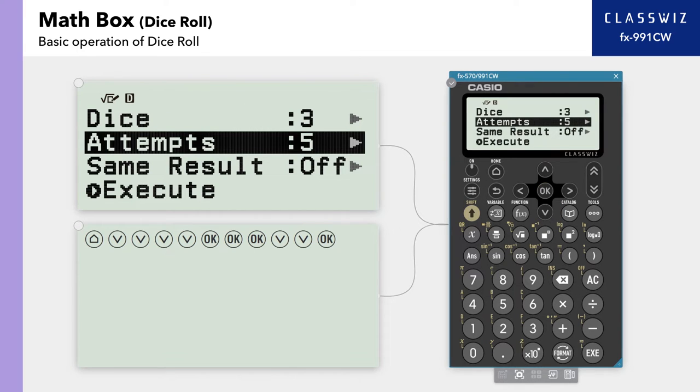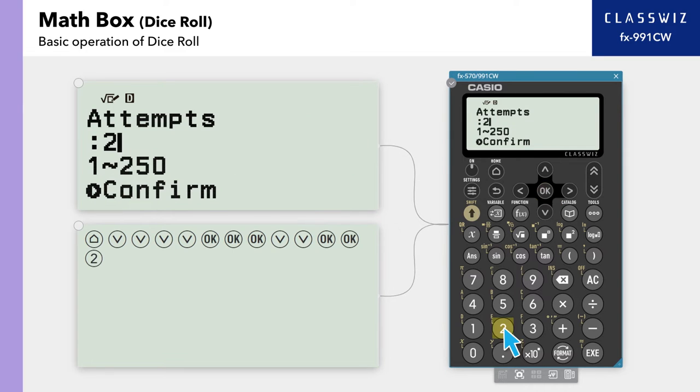For Attempts, choose how many times to roll the dice. You can choose a value from 1 to 250. Here, let's enter 250.